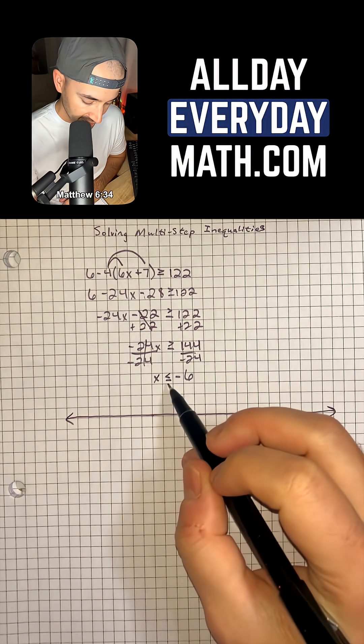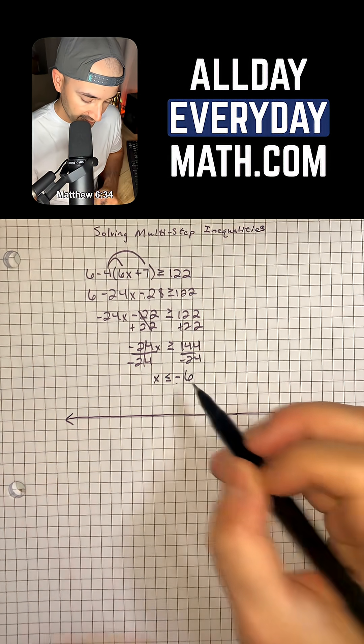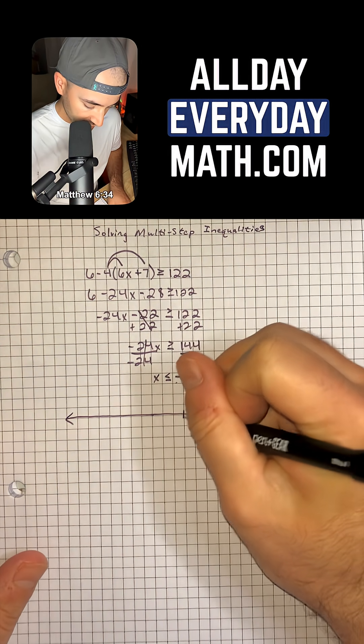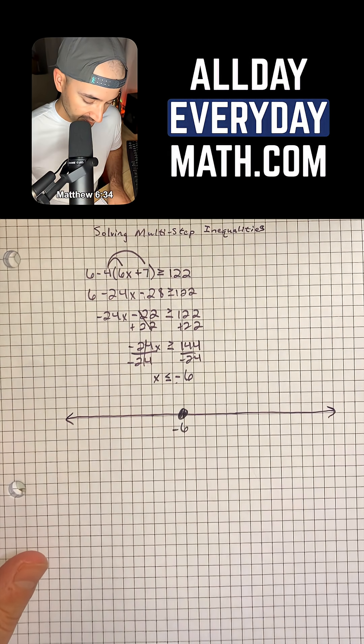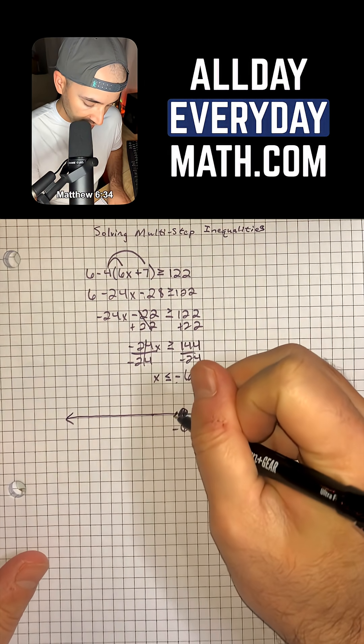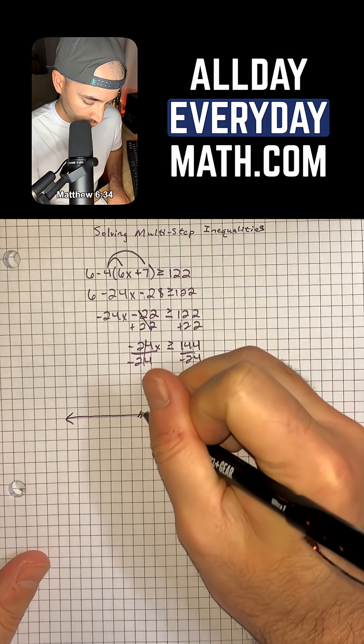So x is less than or equal to negative 6. And so on a number line, we would just put a filled in circle at negative 6 and then we would shade to the left because it's less than or equal to.